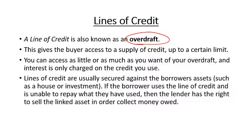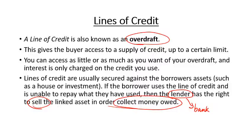For example, if you own a house worth $450,000, you might have a line of credit of $50,000 secured against that house. You're essentially telling the bank: I own this $450,000 house, please lend me $50,000 and if I can't repay it, you can claim part of the house. If the borrower cannot repay the line of credit, the bank has the right to sell that asset to recover the money they lent.